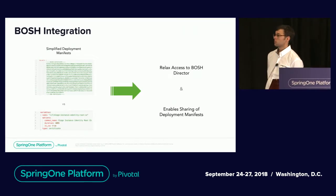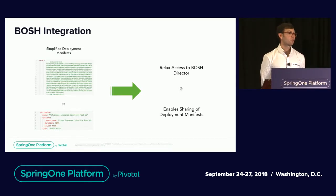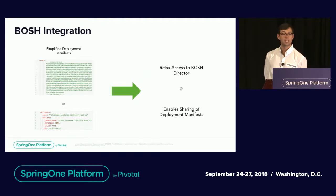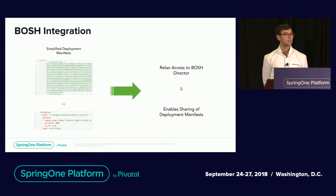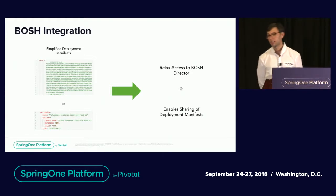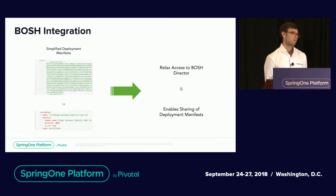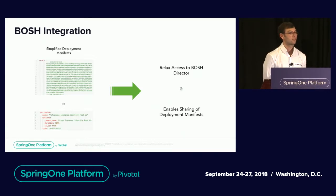What does this mean for a platform team that uses BOSH every day? You don't have to worry about who has access to your BOSH director, because every time they type 'bosh manifest' and get that manifest outside of BOSH, they don't see the cert — they just see the variable. I can give my new guy on the team access to BOSH without risking exposing Postgres passwords and certificates. And sharing manifests is easy — I can type 'bosh manifest', export to a text file, send it to a friend at another company, and never worry about leaking credentials or having to redact my whole manifest.